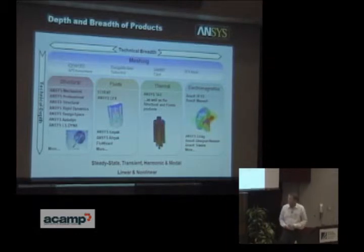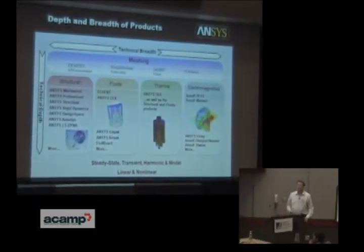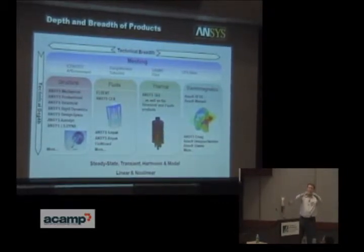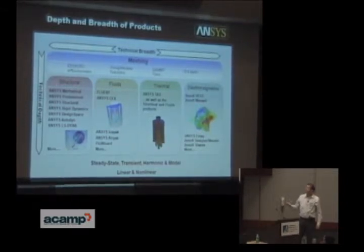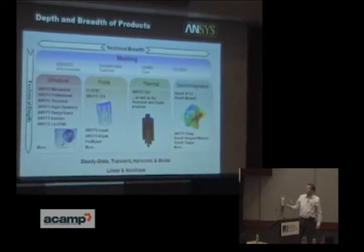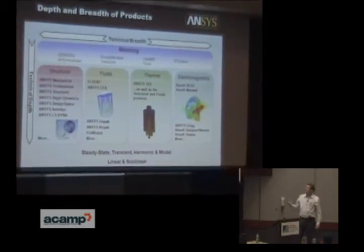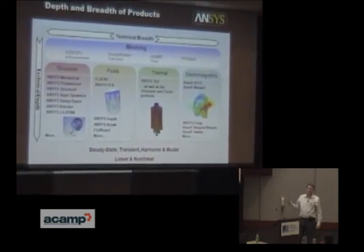In terms of the products we offer, we range from structural analysis — so anything from bending a rod, where you have a steel rod and want to understand how much it will bend under a given load — all the way to a hip prosthesis. On the fluids side, the Boeing 777 was fully designed with CFD using our Fluent software.